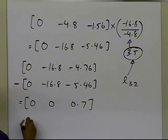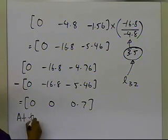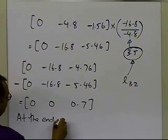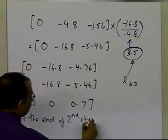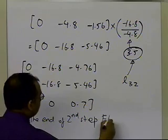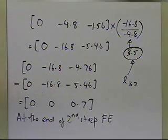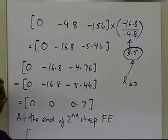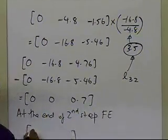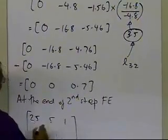So if I write down now my matrix at the end of second step, which is the last step of forward elimination, because I always conduct n minus 1 steps of forward elimination, I'll get the following. I'll get 25, 5, 1, first row stays the same.